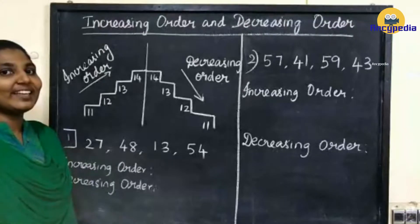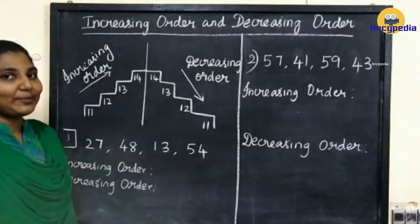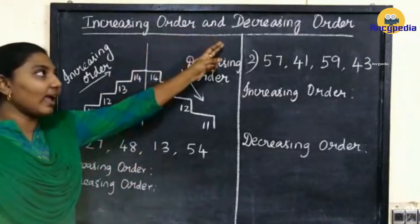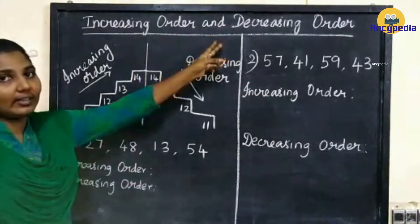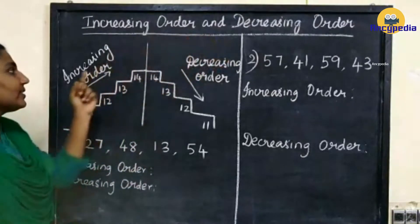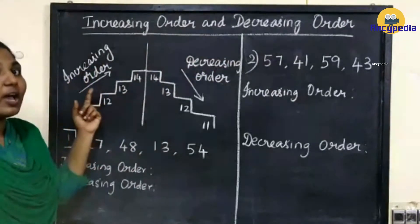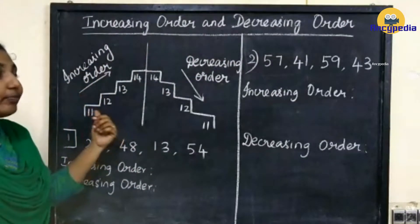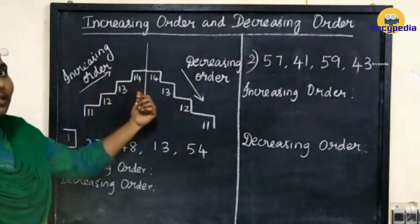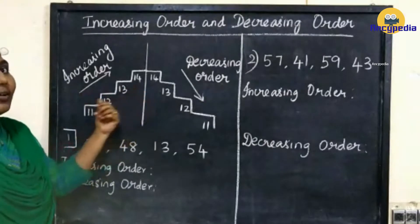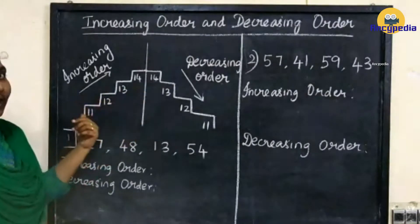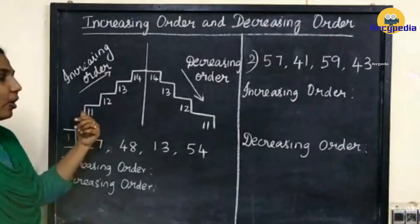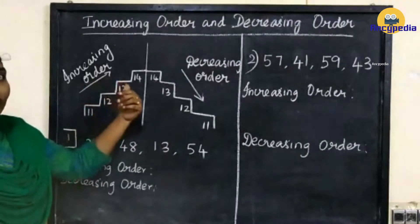Good morning children. Today I am going to teach you increasing order and decreasing order. First, increasing order means we have to write the numbers from smaller to larger. In increasing order, we have to write the numbers from smaller to larger.